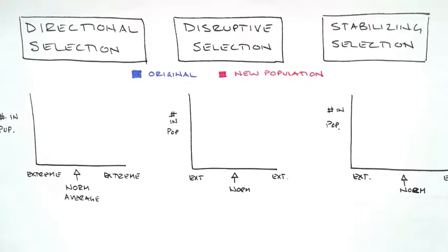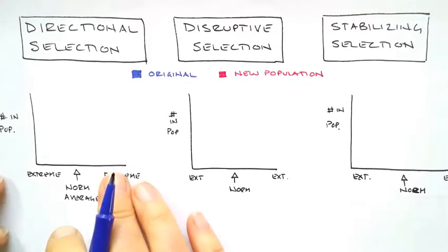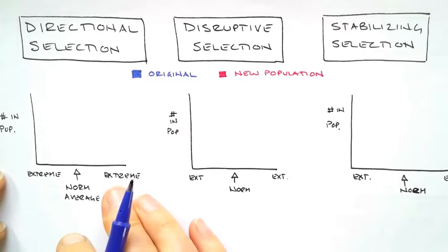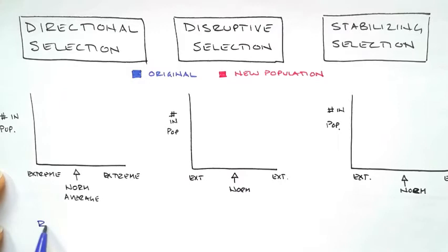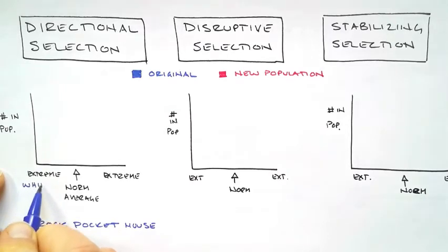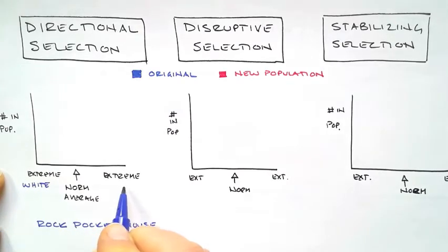Now let's look at directional selection first. A great example of this is the rock pocket mouse. And if you remember that video that we watched on that, so for example, one extreme here would be white, the other extreme would be black, and the average would be tan.